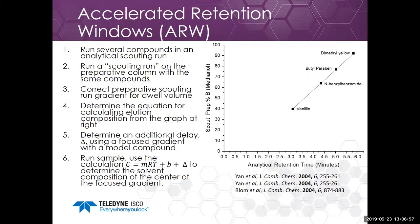Another approach is something called accelerated retention windows. You can run several compounds in an analytical scouting run and plot their retention time as a function of the solvent required to elute the compound. You then have to correct the preparative scouting gradient for dwell volume. You determine this equation and an additional delay that these authors called delta, using a focused gradient with a model compound. You can then use the equation: C (the solvent composition) = M × RT + B + delta to determine the solvent composition at the center of the focused gradient.